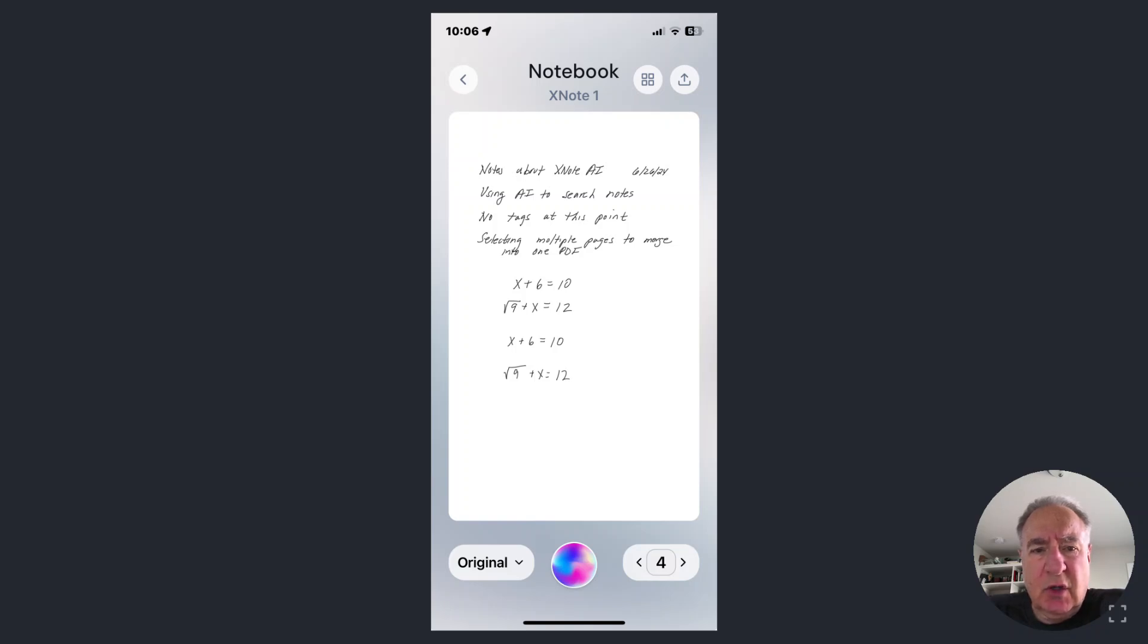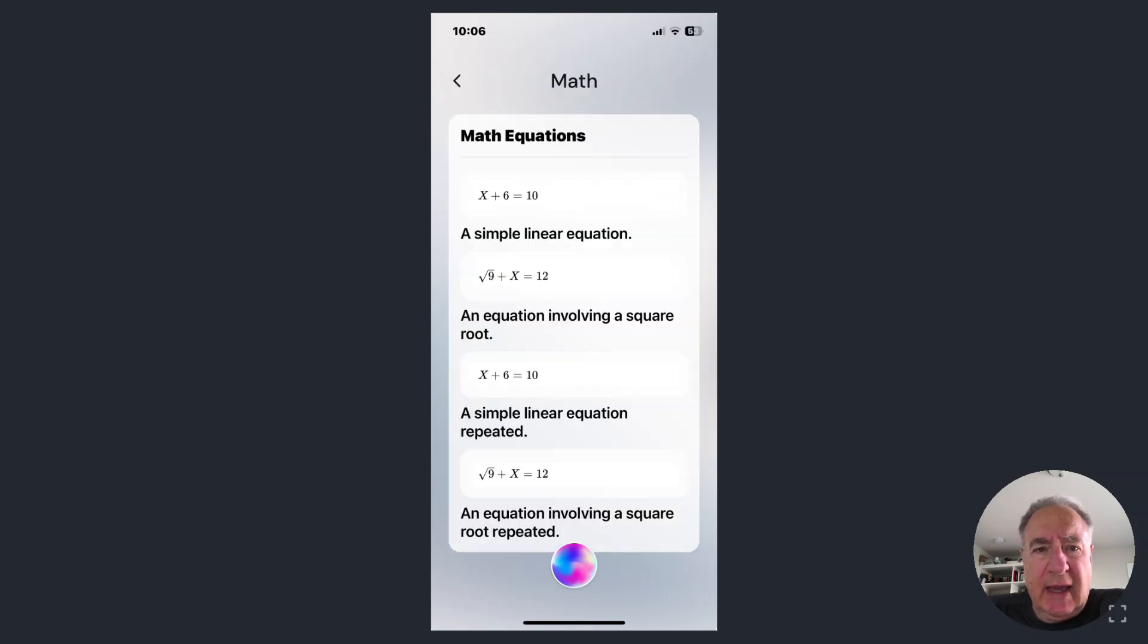This is my handwritten note, and then once I apply the AI and look at the math, it pulls out all the mathematical equations that I have written. And now, using AI, I can click on this AI button and then ask it to solve the problems.